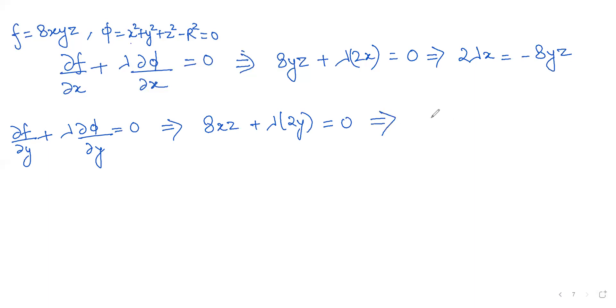Then we have ∂f/∂z + λ∂φ/∂z = 0. That means 8xy + λ(2z) = 0. So we get 2λz = -8xy.